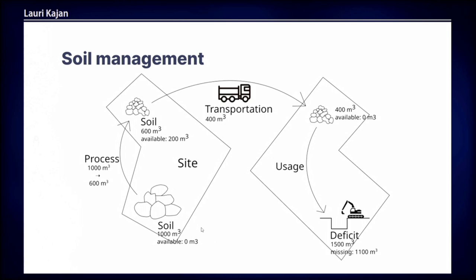There is also the question of quantities. If we process a thousand cubic meters of big rocks into smaller rocks, it comes to 600 cubic meters. Then we transport only 400 cubic meters and use all of those for the deficit. So there is nothing available for those big rocks, and there are 200 cubic meters left after transportation. We have to manage all of that.